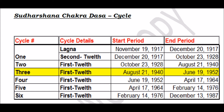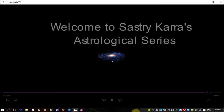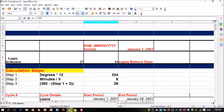I had done this for Indira Gandhi all the way up to the sixth cycle, because we all know she died in 1984, so I stopped at that point. Now let me show you live how to calculate this using Microsoft Excel — an automated version of calculating the Sudarshan Chakra. Once you input the birth date and the Lagna degrees and minutes, Excel automatically calculates it.